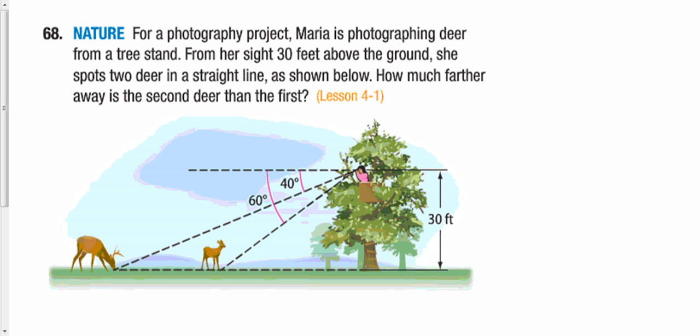Next problem: a lady is photographing deer from a tree stand. From her height of 30 feet above the ground, she spots two deer in a straight line. The question asks how much further away the second deer is than the first. This is a very good problem — there's a strong probability I will use it on the test.